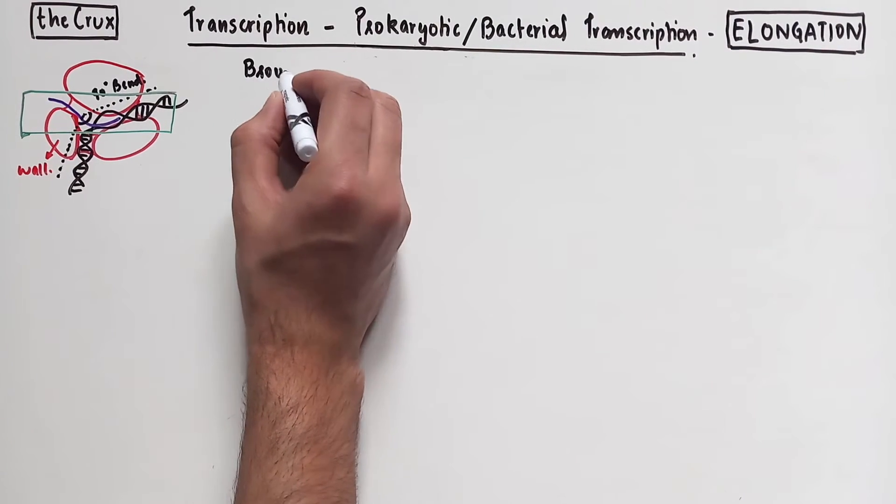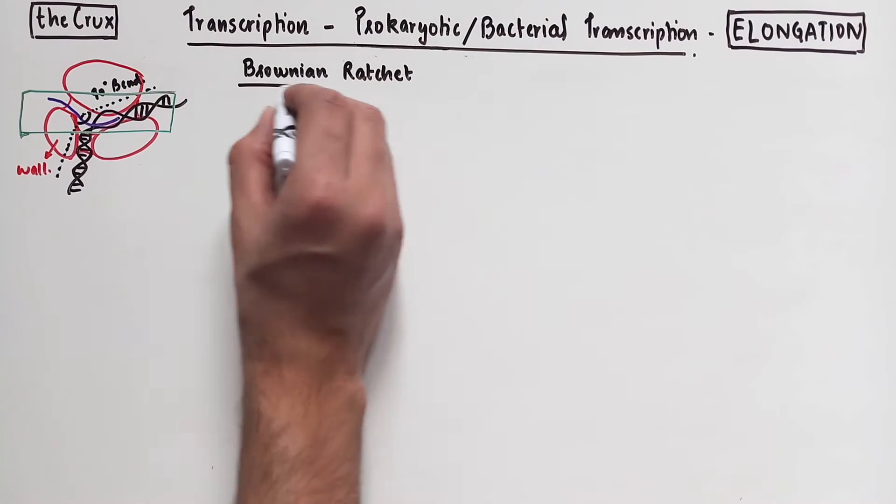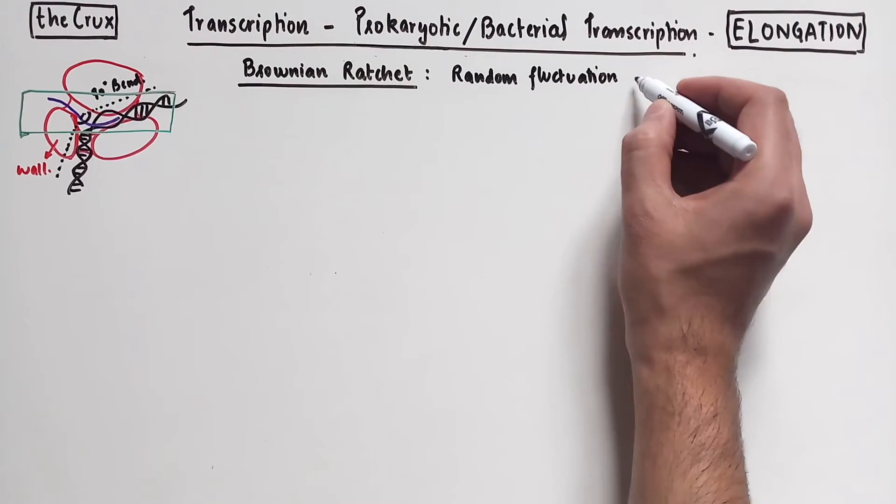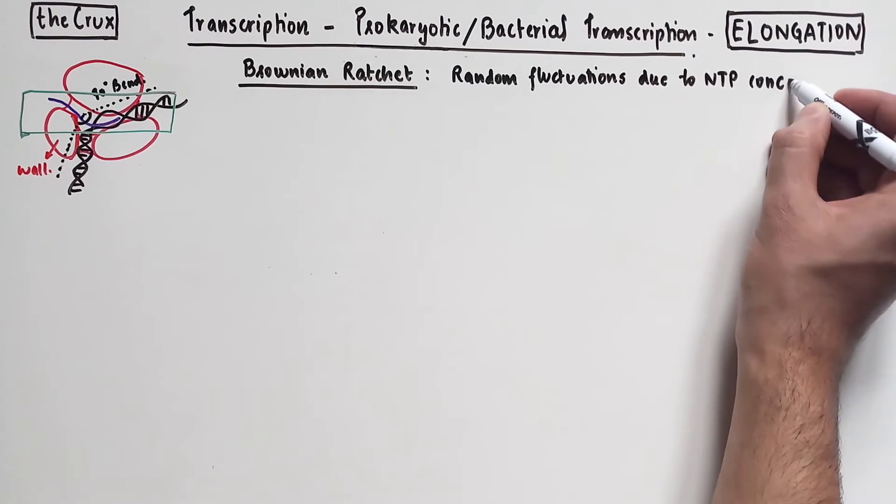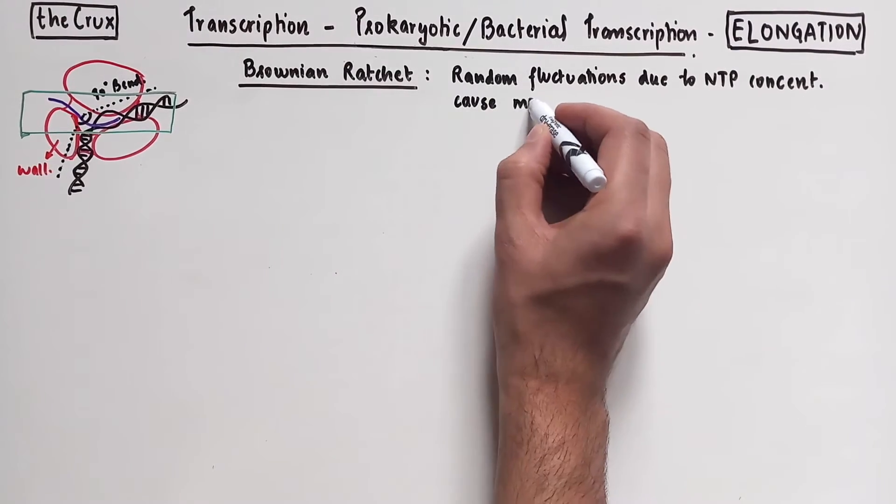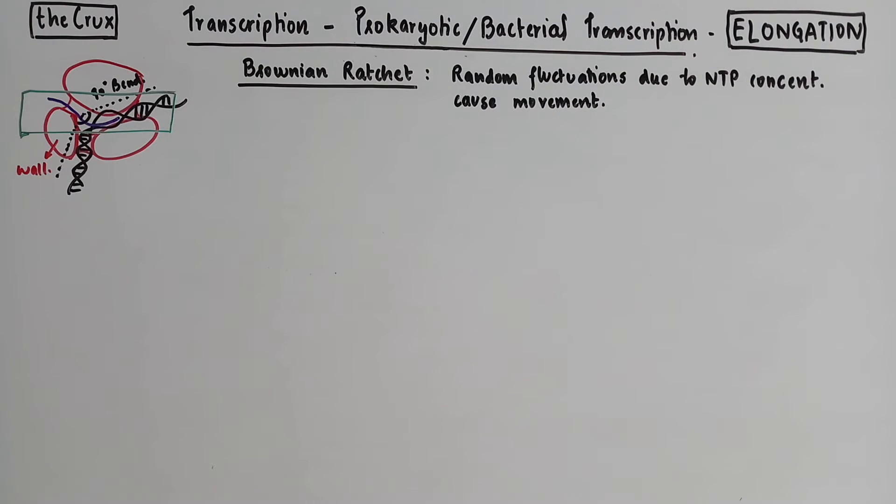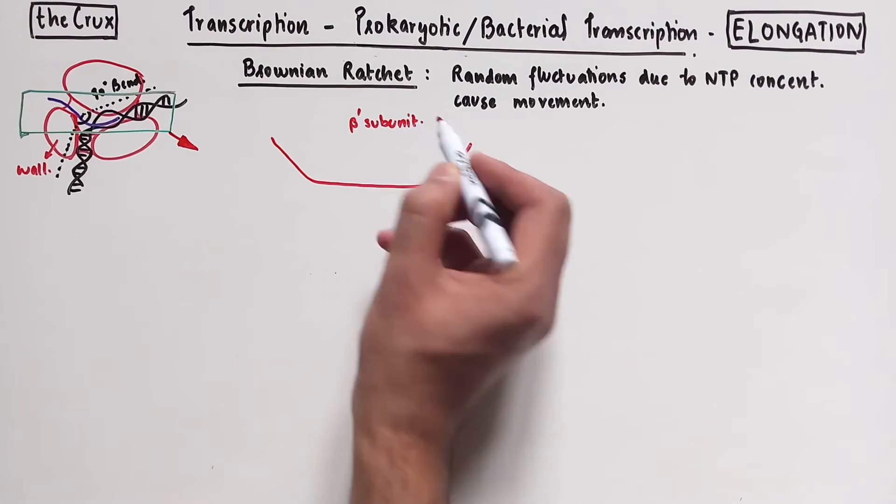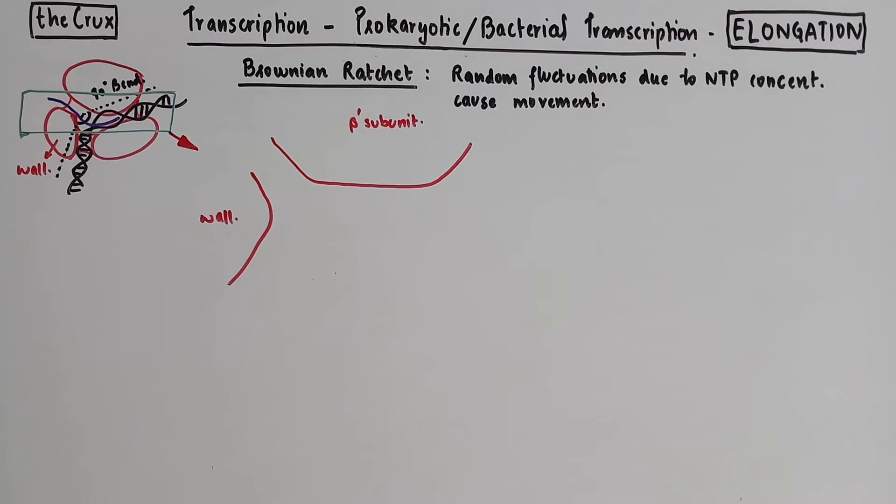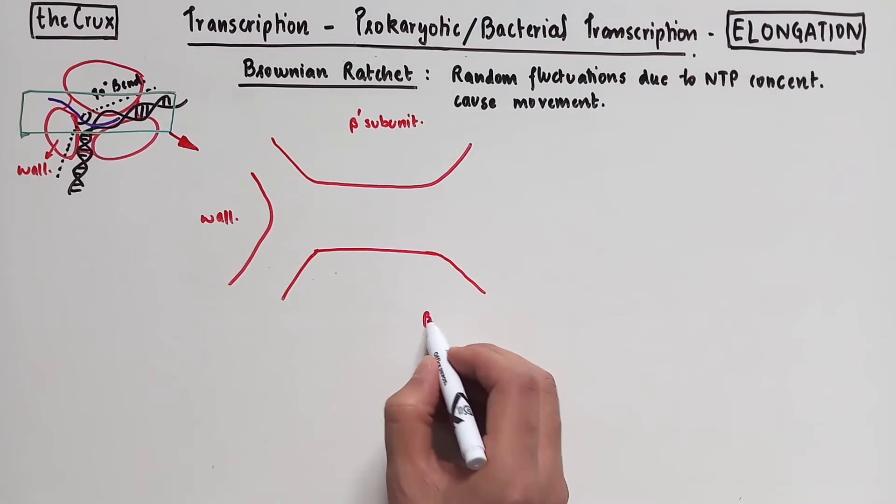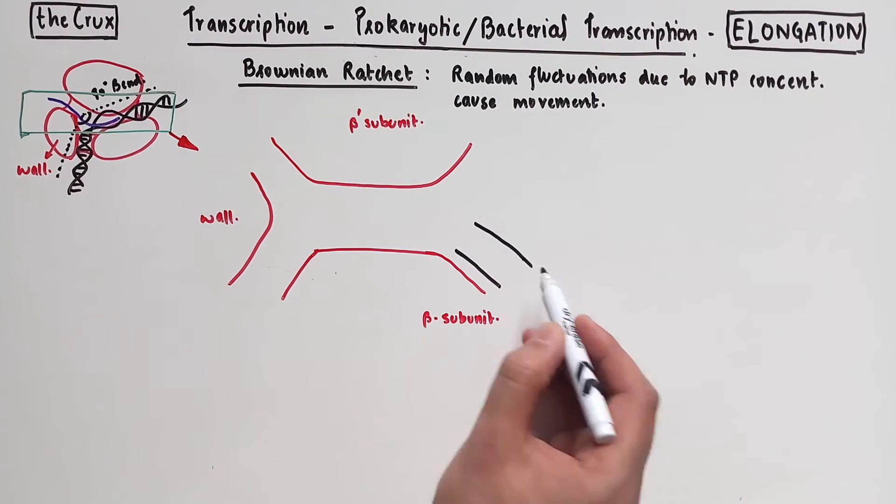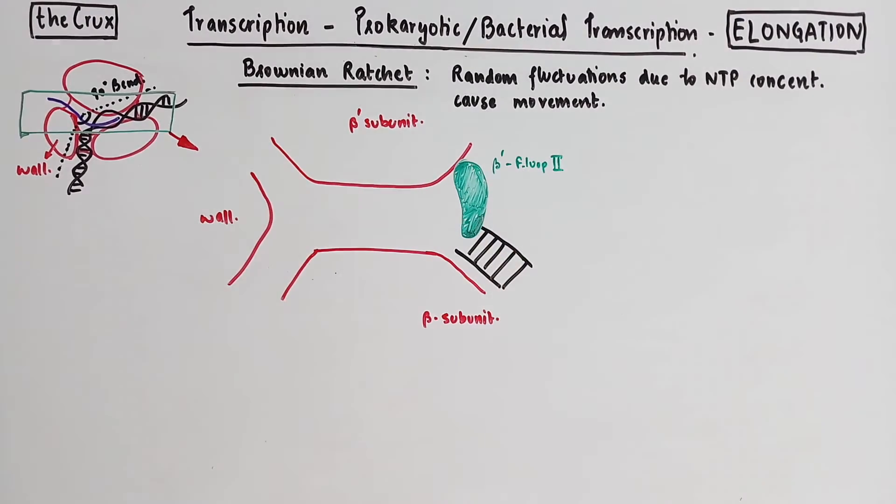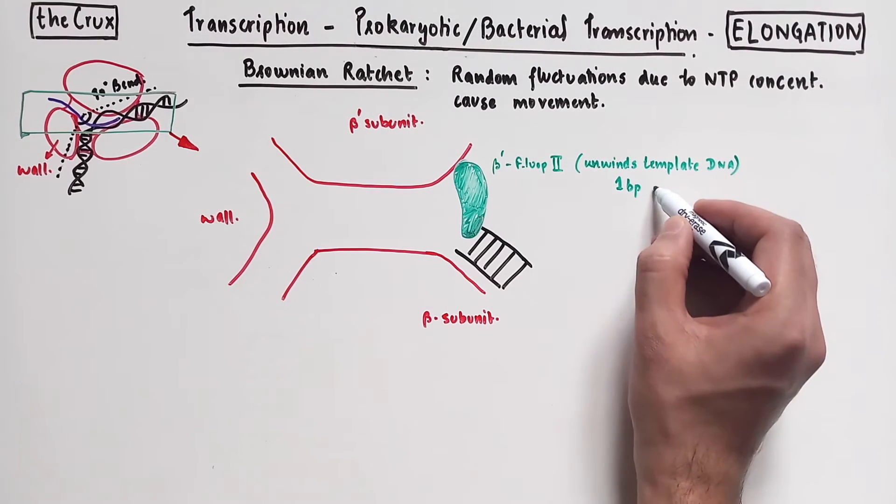The most common mechanism used to explain the elongation process is the Brownian ratchet motion model, which involves random fluctuations in the movement of the enzyme that are due to the NTP concentrations at the active site, and that causes movement of the enzyme. Let's look at the Brownian ratchet model in more detail by looking at the active site region of the enzyme. We have the beta prime subunit on the top and the wall on the left, at which the DNA bends. At the bottom, we have the main beta subunit. The DNA enters from the right as a double-stranded molecule, but it is soon met by the beta f loop 2, which unwinds the double-stranded DNA.